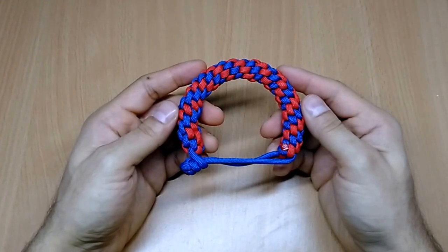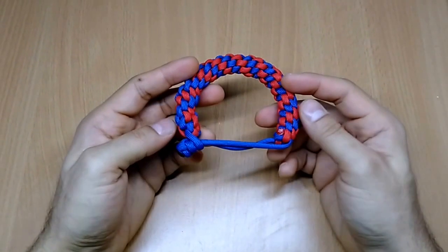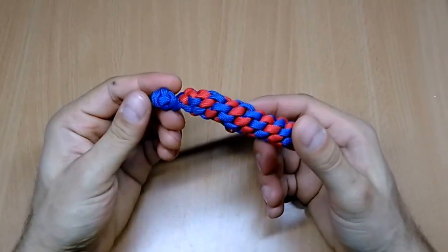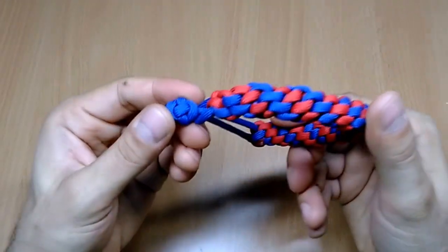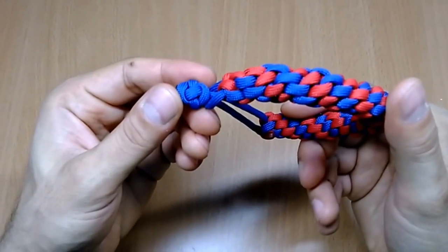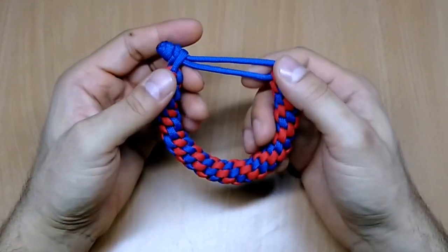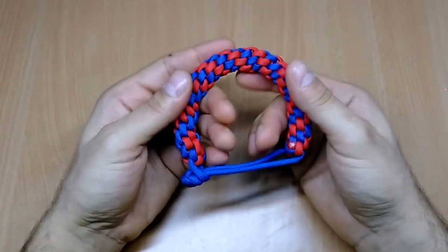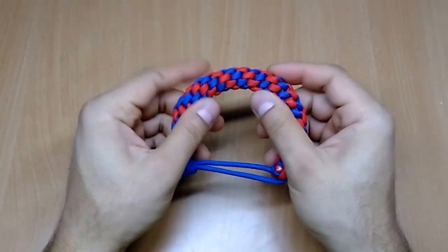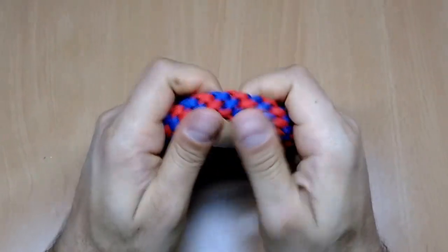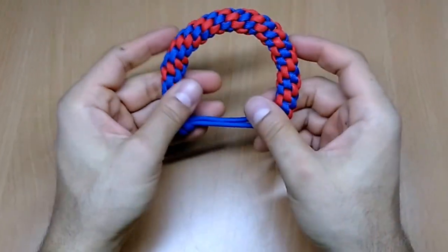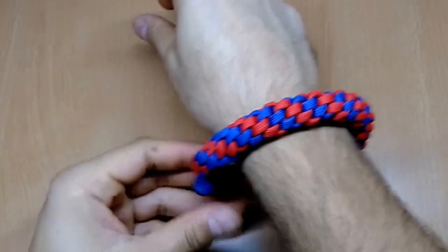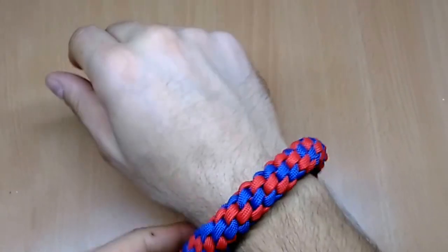The four strands crown braid paracord bracelet with the ending of the two strand crown diamond knot. In the next few minutes I'm going to show you how to make this particular bracelet. As you can see, the bracelet is very firm, very thick, and it's very robust, so stay tuned because the tutorial is right around the corner.